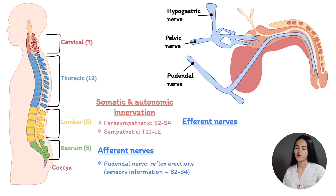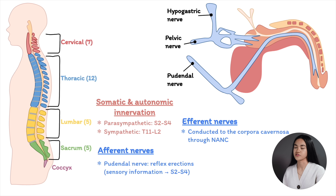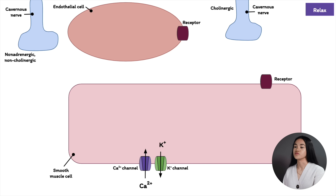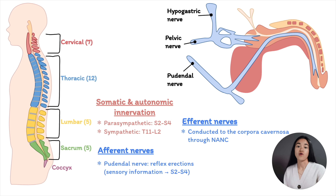Parasympathetic neurons are located in S2 to S4, the sacral spinal cord. Afferent impulses are conducted to the corpora cavernosa through long preganglionic pelvic nerves and through short postganglionic non-adrenergic non-cholinergic (NANC) fibers. These NANC fibers are crucial in erection, and their neurotransmitter is nitric oxide (NO). Acetylcholine also plays a role in parasympathetic nerve signaling, which is responsible for smooth muscle relaxation. It stimulates the release of nitric oxide by activating endothelial cells.